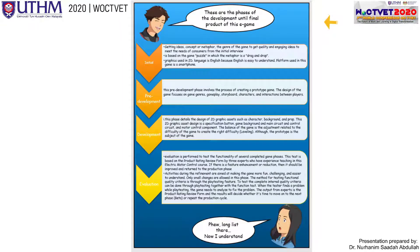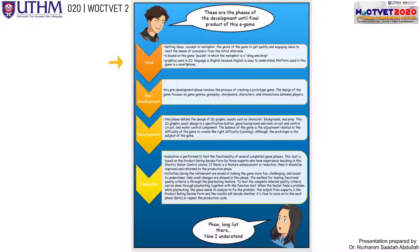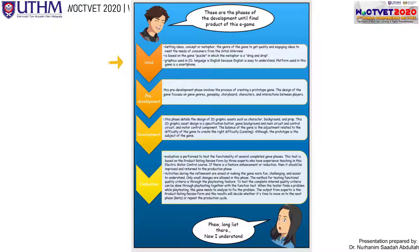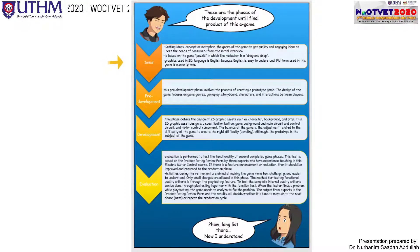These are the phases of development until the final product of this E-Game. It started with the initiation phase — the ideation — where ideas and concepts are formed. This game is based on puzzles and uses drag-and-drop interaction. It is in 2D only, because it's easy to make students see the layout from the top. The platform for this E-Game is a smartphone.